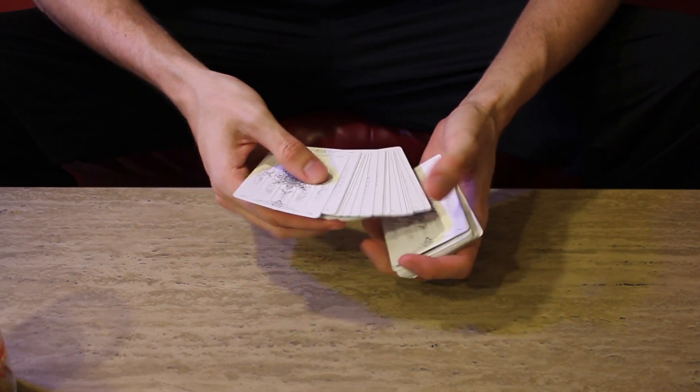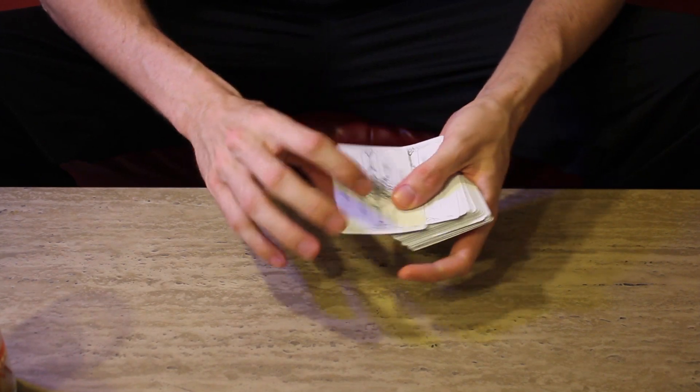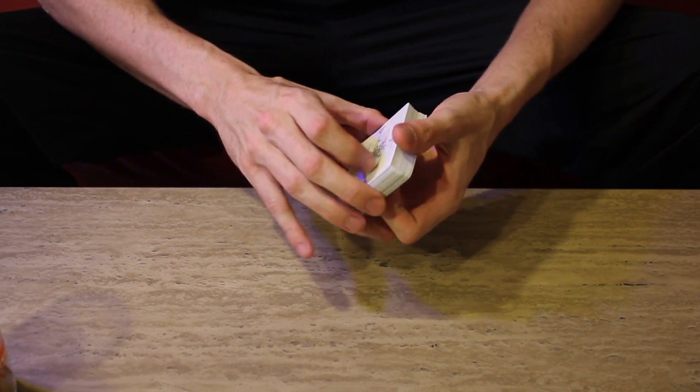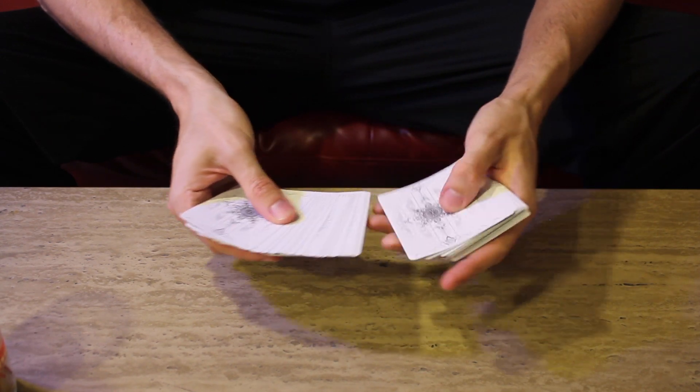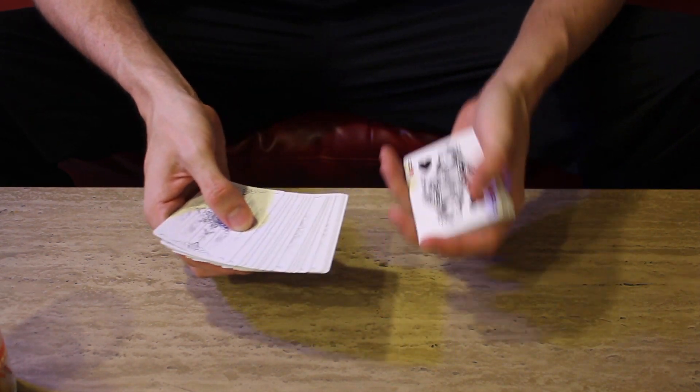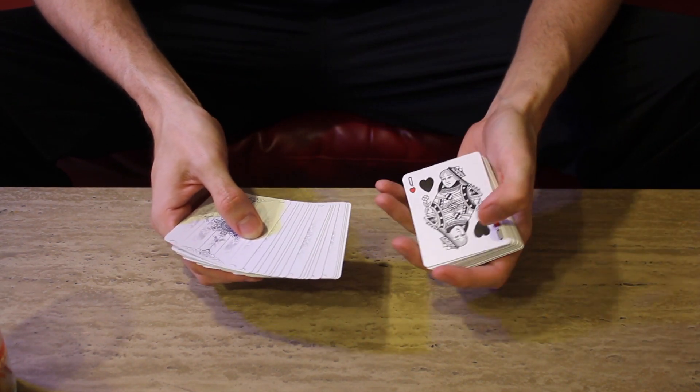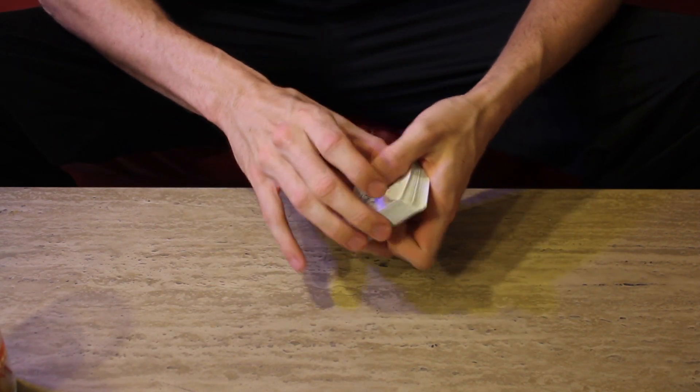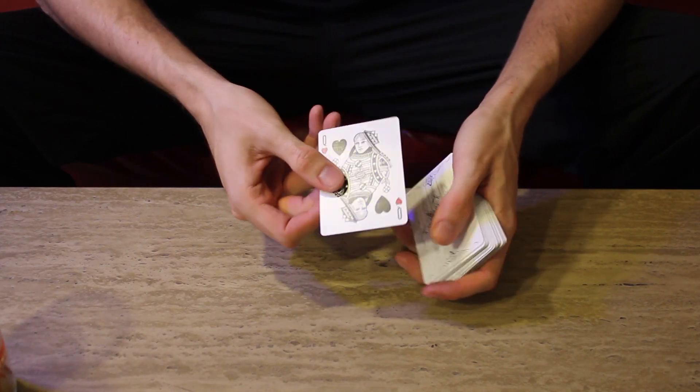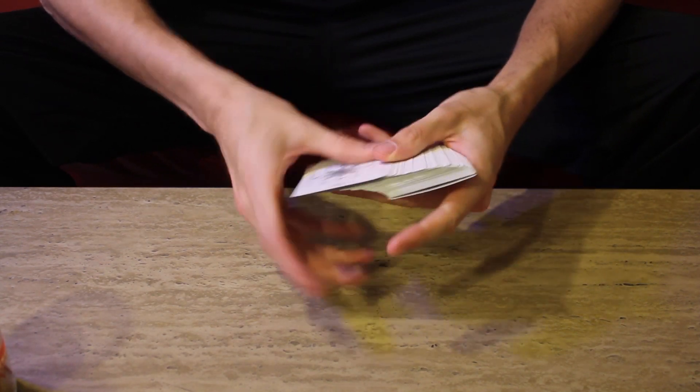Now we've learned the classic pass, as hopefully a lot of you have learned, and now we're just going to be adding a riffling type of motion to it to cover the move. And this is very popular. I have seen on TV specials, David Blaine used this method. I've seen Chris Angel use this method to control a card from the middle of the deck to the top.